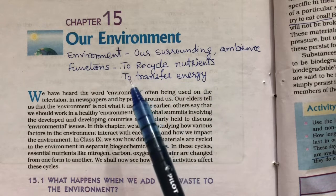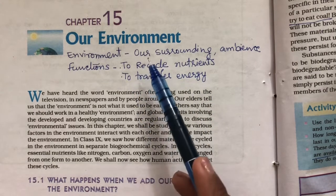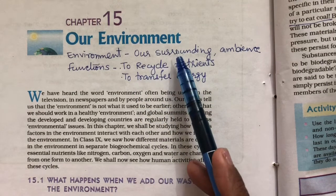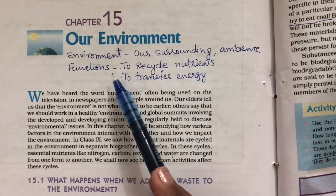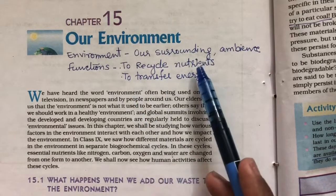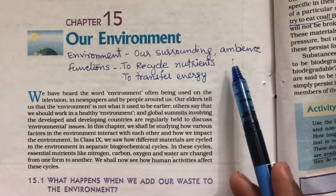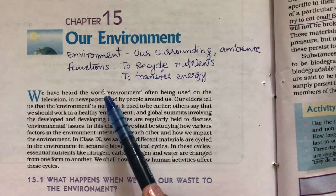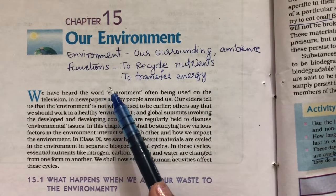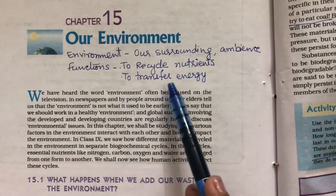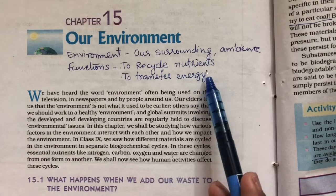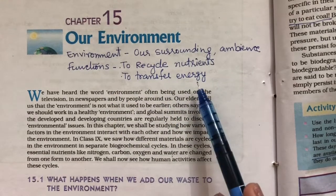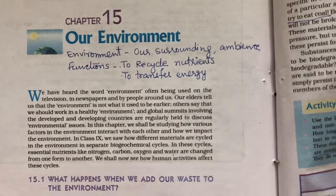Let's talk about Chapter 15: Our Environment. Environment is our surrounding ambience. The functions of our environment are to recycle nutrients and to transfer energy.